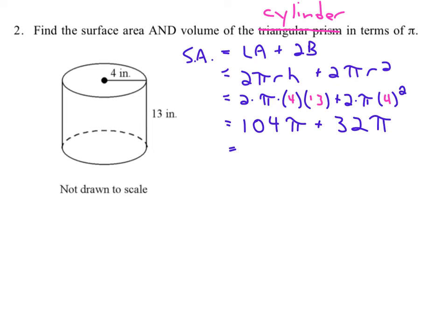And now we just add them together. What's 104 plus 32? It's 136, and we need to put times π. And this is surface area, so anytime we have the units of surface area, the units are squared. So the surface area of this is 136π inches squared.